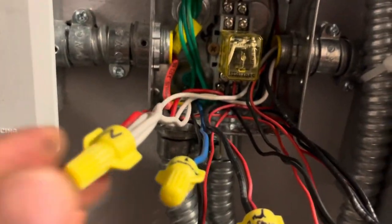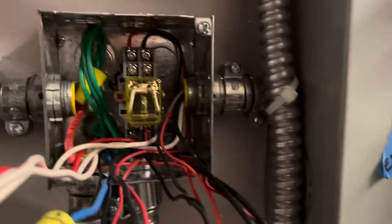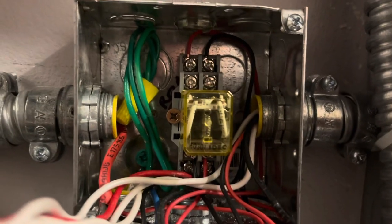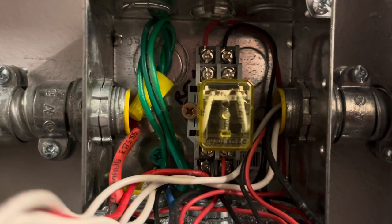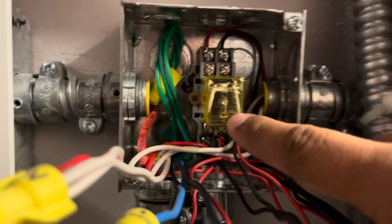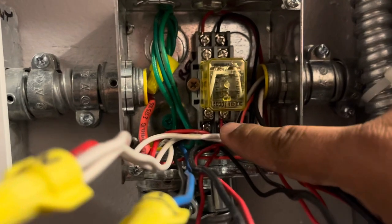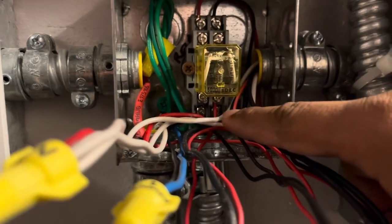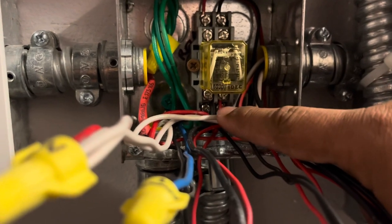So all your neutrals will tie up. Your line side of them will go to 9 and 12 on your relay. So 9 and 12 are down here below, the very bottom. So that's where your line is coming in for your 120.